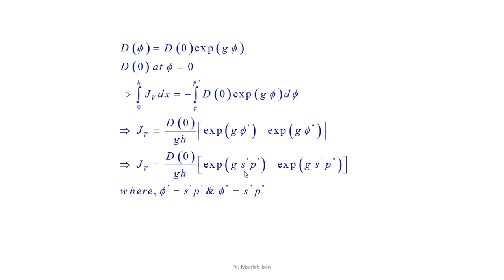Substituting the value of phi as a function of partial pressure using Henry's law, you can write: J_V = (D₀/G·H)·[exp(G·S-dash·P-dash) − exp(G·S-double-dash·P-double-dash)], where Henry's coefficients S-dash and S-double-dash are assumed different at the feed side and permeate side respectively. This equation can be used to calculate the flux across the membrane in the pervaporation process assuming anisotropic swelling — where the diffusivity of the feed species in the membrane changes with the concentration of that species present in the feed mixture.